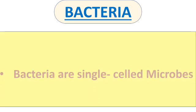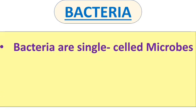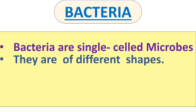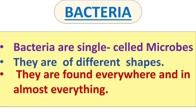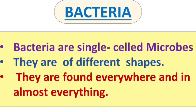Bacteria were among the first life forms to appear on the earth. Bacteria are single-celled microbes. They are of different shapes and are found everywhere and in almost everything — in every habitat on earth. They are found in soil, rocks, oceans, even in plants, animals, and also in human beings.